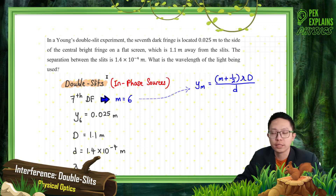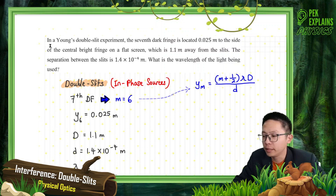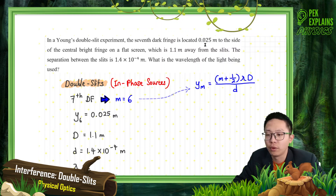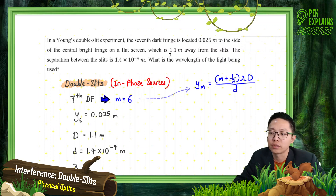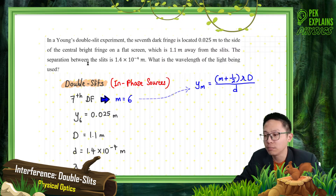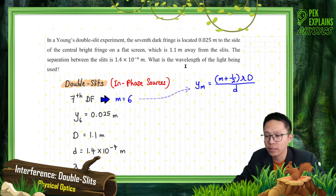Now let's look at the first question for interference - Young's double slit experiment. In Young's double slit experiment, the seventh dark fringe is located 0.025 meter to the side of the central bright fringe on a flat screen which is 1.1 meter away from the slits. The separation between the slits is 1.4 × 10⁻⁴ meter. What is the wavelength of the light being used?